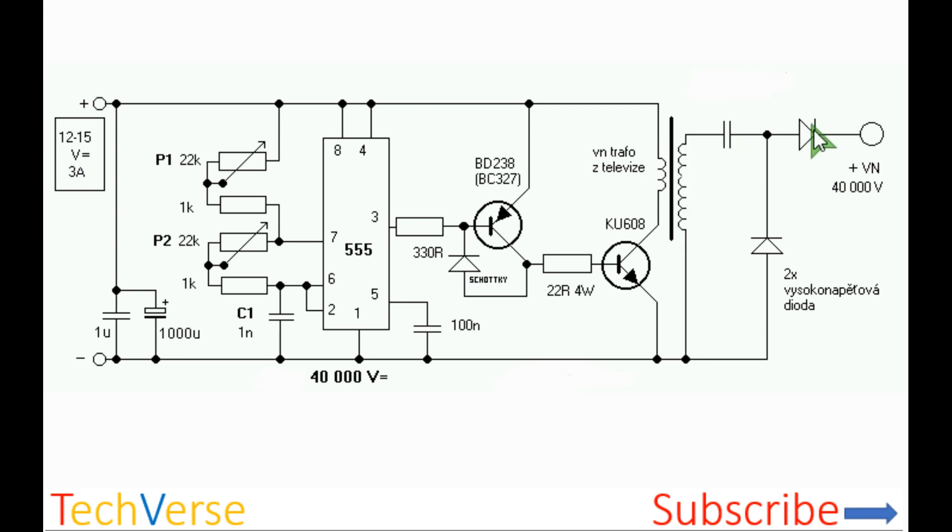On the output, you have a voltage doubler made up of these two high voltage diodes. The diodes should be rated at least 15 kilovolts, as well as this capacitor.